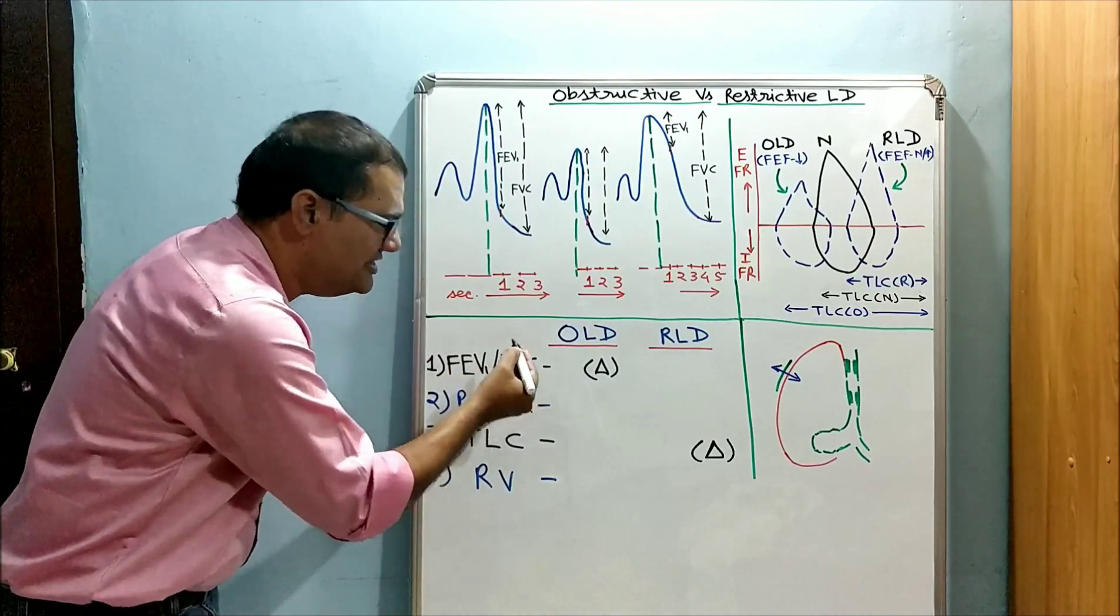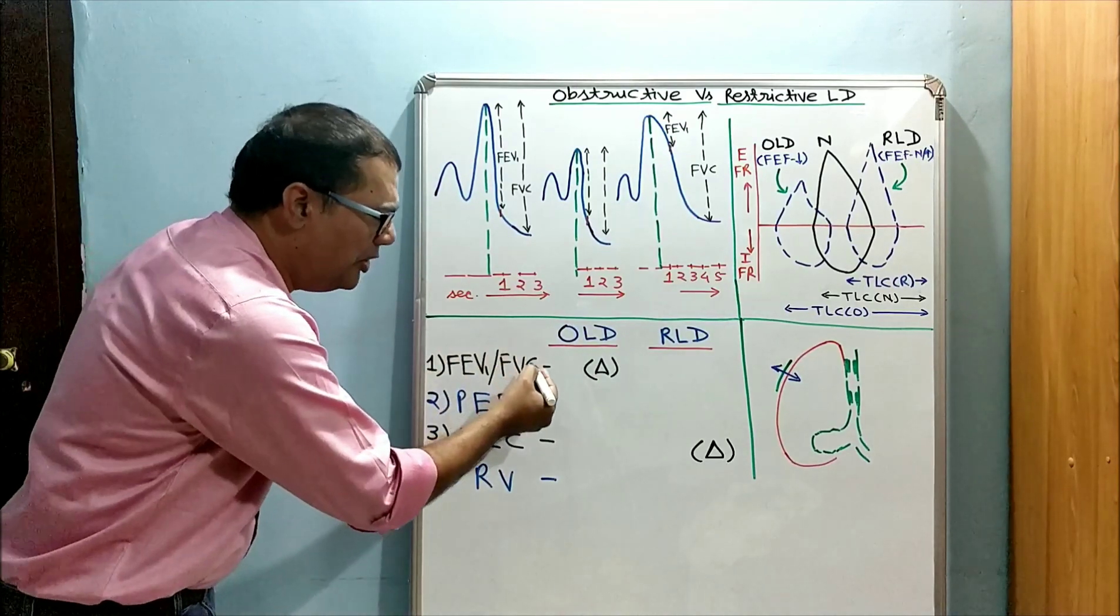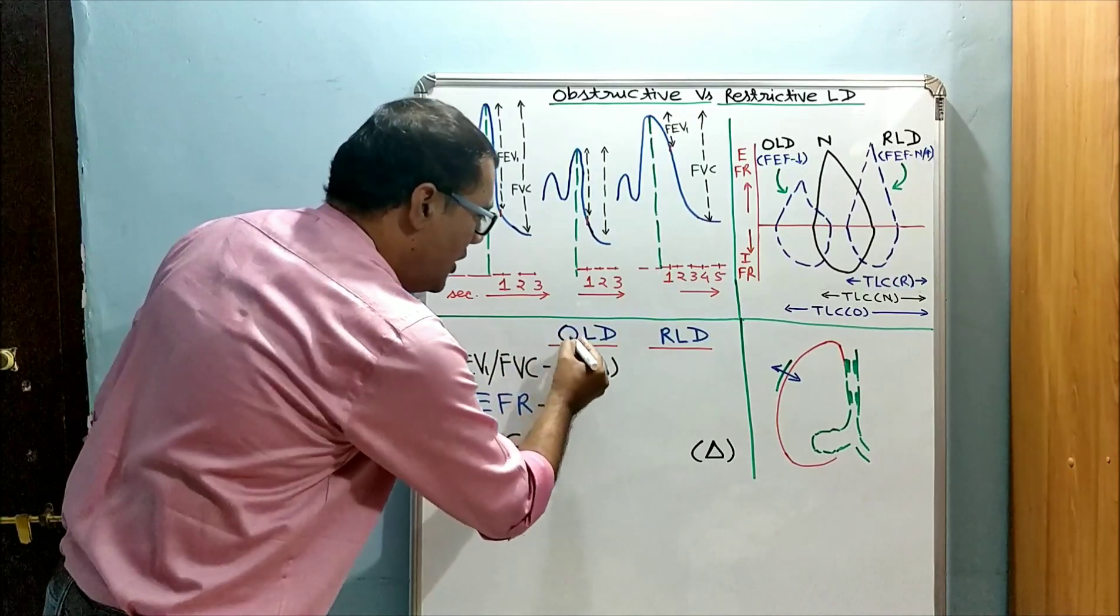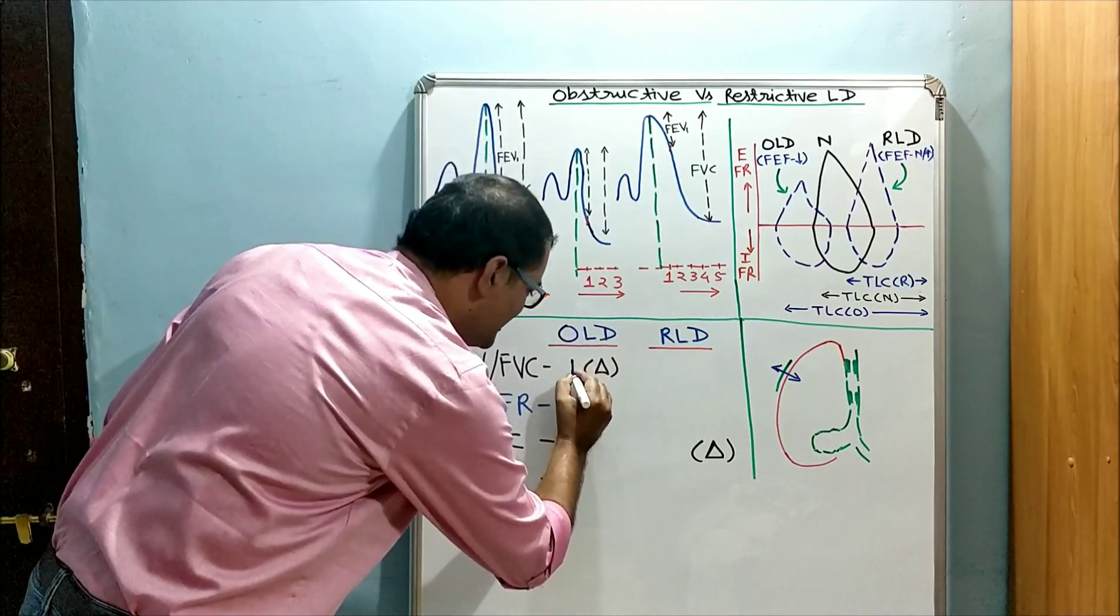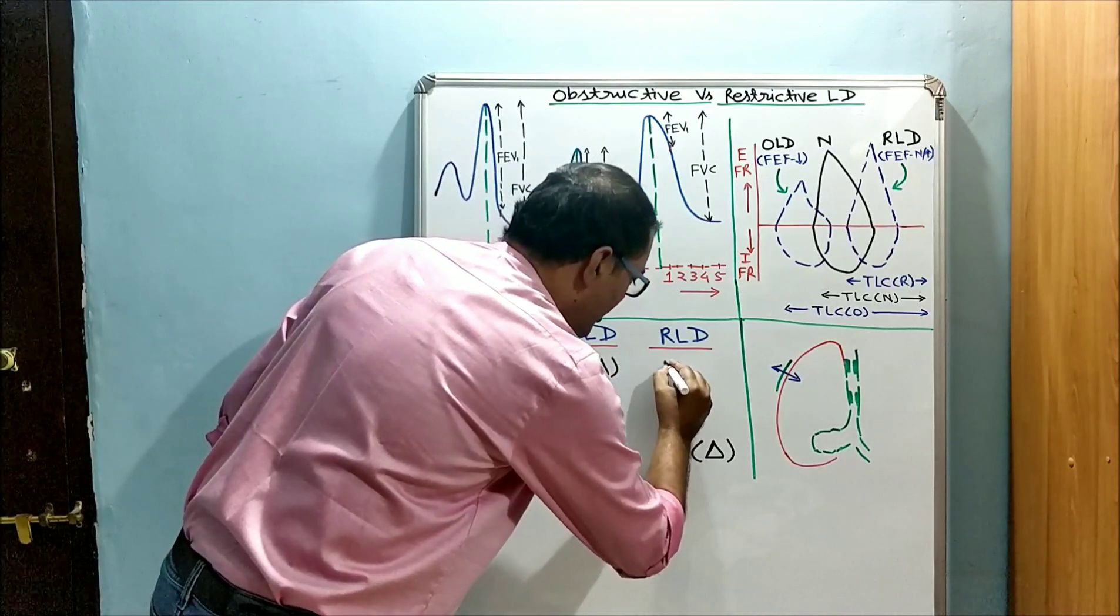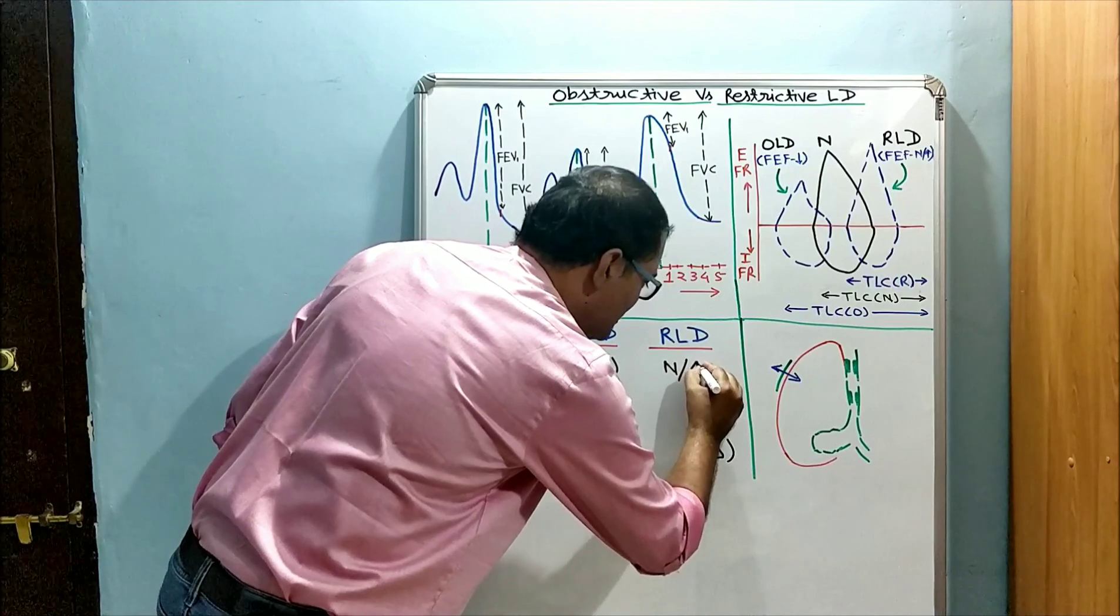The first is FEV1-FVC ratio. This is the most important diagnostic test, or cardinal test, to diagnose obstructive lung disease, where it is reduced, while it is normal or increased in restrictive.